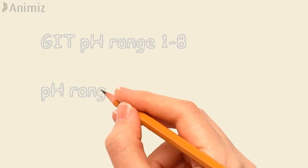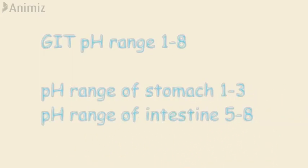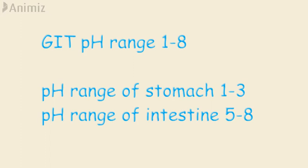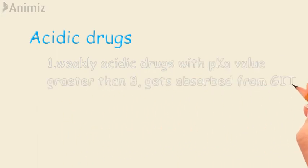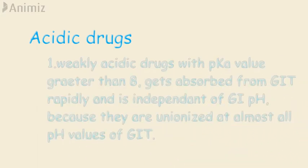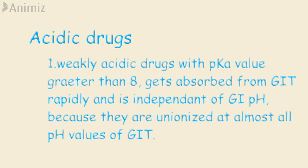The GIT has a pH range from 1 to 8: for the stomach, 1 to 3, and for the intestine, 5 to 8. Based on this, we can make some generalizations regarding ionization and absorption of drugs as predicted from the pH partition hypothesis. For acidic drugs: very weak acidic drugs with pKa greater than 8 are unionized at almost all pH values of the GIT, so their absorption is rapid and independent of GI pH.